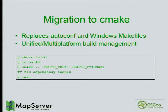We also migrated to CMake with MapServer 6.4. We moved away from autoconf on Linux and handmade Windows makefiles, giving us a unified build environment and allowing us to clean up historical cruft in the autoconf scripts. The build recipe now looks much cleaner.